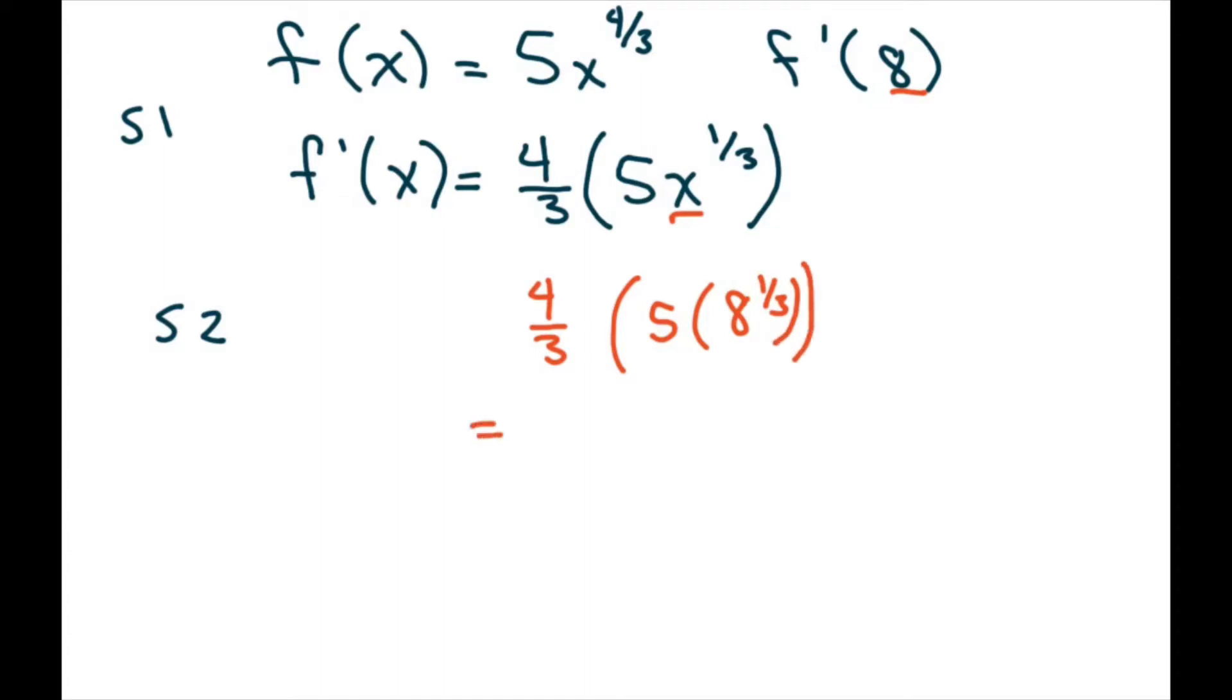So this equals 4/3 times 5 times 2, and that's going to give you 40 divided by 3.